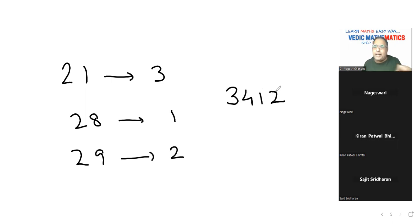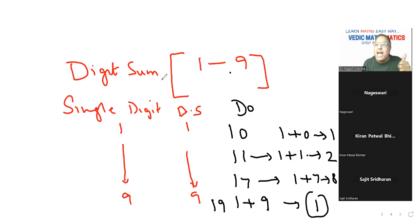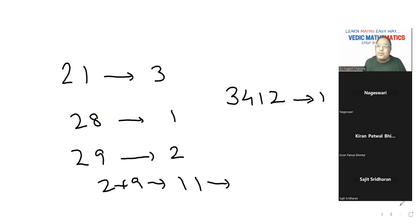But, it starts from your double digit number. Now, the first double digit number is 10. So, what is the digit sum? 1 plus 0, again 1. What is the digit sum of 11? 1 plus 1 is equal to 2. What is the digit sum of 17? So, that is 1 plus 7 is 8. And, what is the digit sum of 19? So, that is 1 plus 9. That means, again, 10. That means, 1 only.